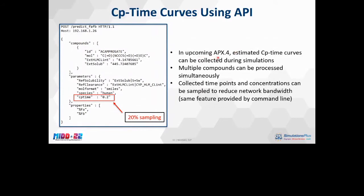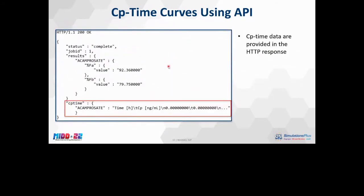One extension for the next API release is that estimated CP time curves can be collected during simulations. Multiple compounds can be processed simultaneously, and the collected time points and concentrations can be sampled to reduce network bandwidth. This feature was added at the request of customers — in command line usage it can greatly reduce the size of result files. The syntax specifies a 20% sampling rate, and the response that comes back includes times and concentrations in a tab-separated string embedded in the response.